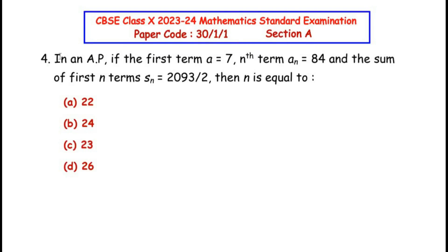Now the fourth question is from the arithmetic progressions chapter. In an arithmetic progression, if the first term a is equal to 7, nth term an is equal to 84, and the sum of first n terms Sn is equal to 2093/2, then the value of n is. Here we can see that four options are being given.